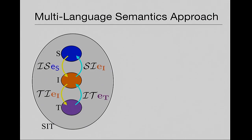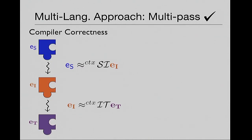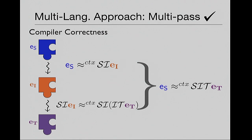This scales to multilanguage compilers as follows: if you have source, intermediate, and target, you have to take them all and put them into one single multilanguage — call it SIT. For every pass there will be boundaries that take you from S to I and I to S. For the next pass, we have I to T and T to I boundaries. Boundaries stack up in an obvious way. When you prove compiler correctness, you prove for the first pass that if ES compiles to EI, then ES is equivalent to wrapped EI, and similarly for the second pass. Each pass of the compiler is proved correct with the same contextual equivalence with the full multilanguage for all passes, and you get transitivity.